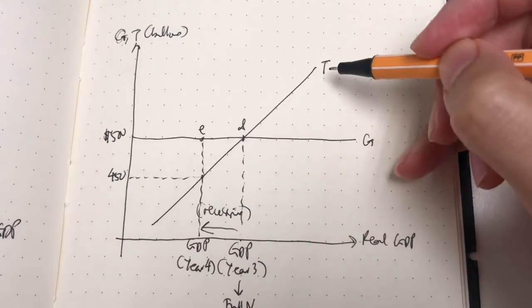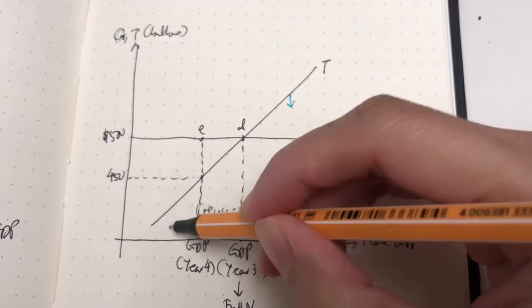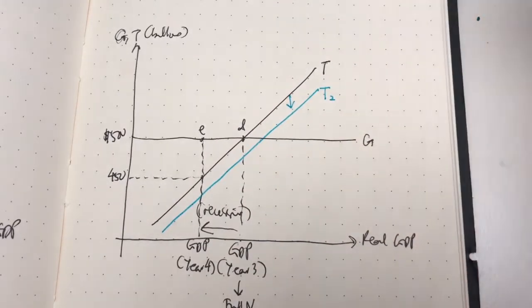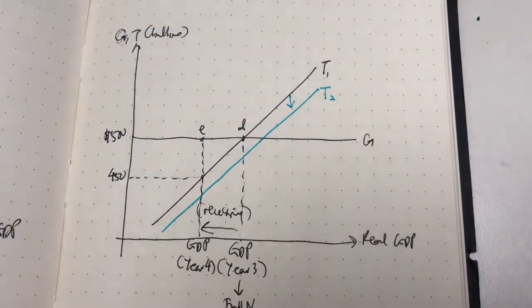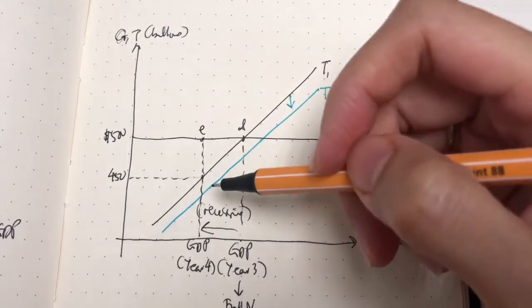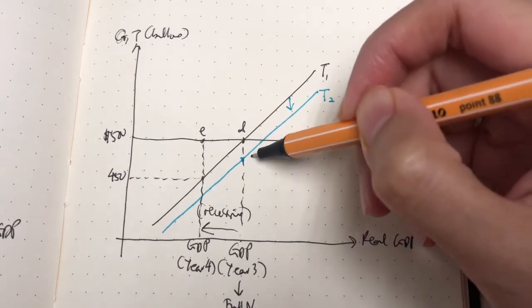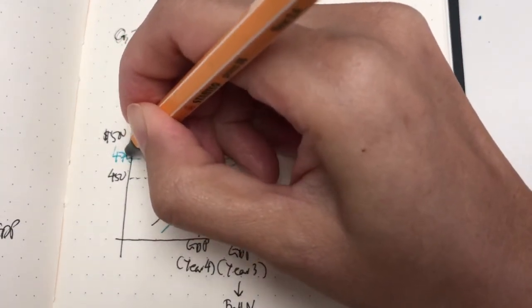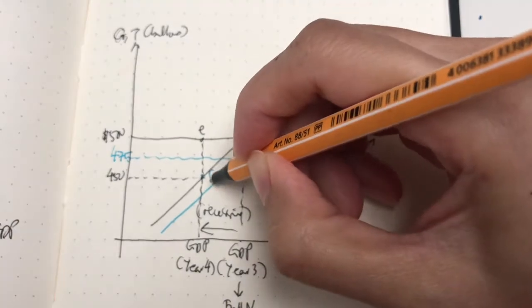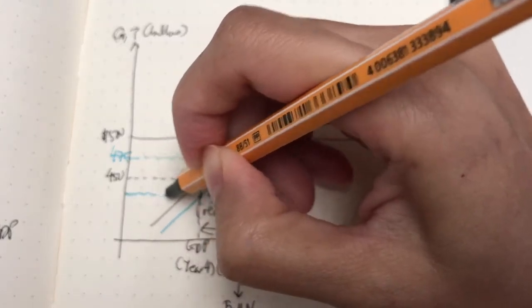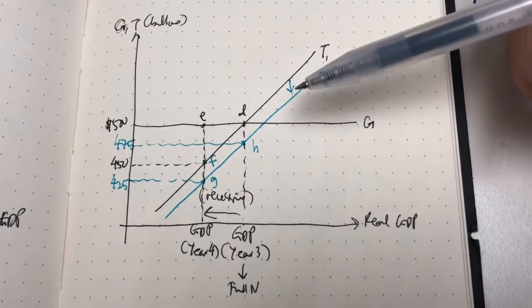We're doing expansionary fiscal policy by reducing tax revenues, so there's a new tax line T2 — previously it was T1. We have several new points: point H at $475 billion, point F, and point G at $425 billion. Let's evaluate this diagram.